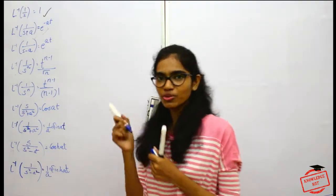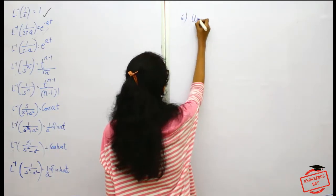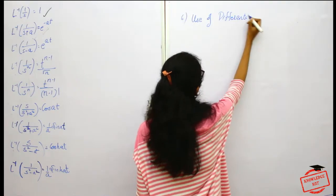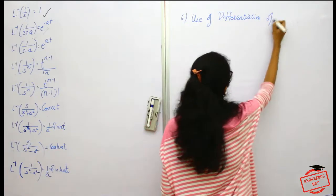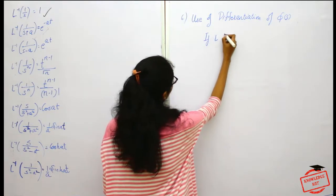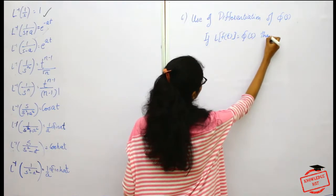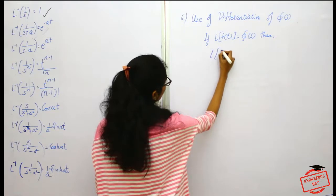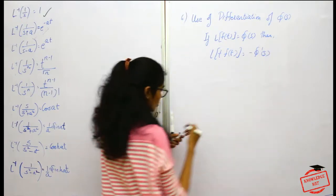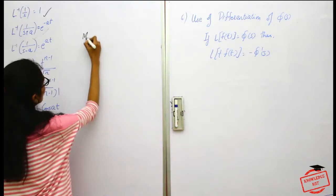We've already seen five methods to obtain the inverse Laplace transform. Let's move on to the sixth method: use of differentiation of φ(s). This method states that if the Laplace transform of f(t) is φ(s), then the Laplace transform of t·f(t) is minus φ'(s).